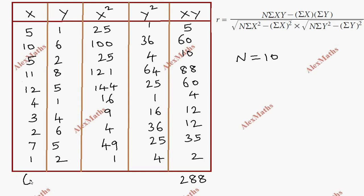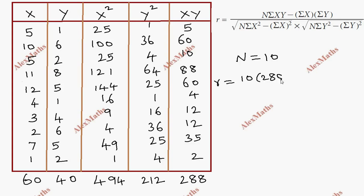Sigma x equals 60, sigma y equals 40. Sigma x square is 494, and sigma y square is 212. These are all the values needed. Now substitution: R equals N value 10 into sigma xy, which is 288, minus sigma x into sigma y, which is 60 into 40.